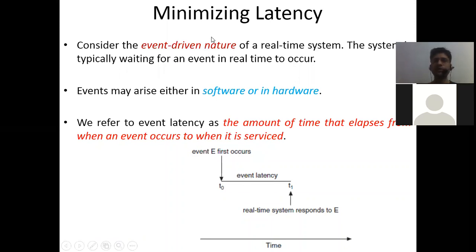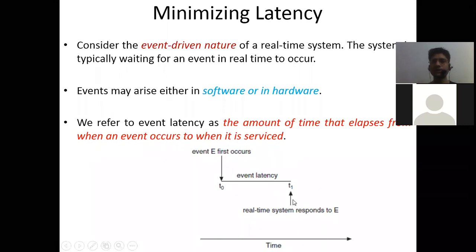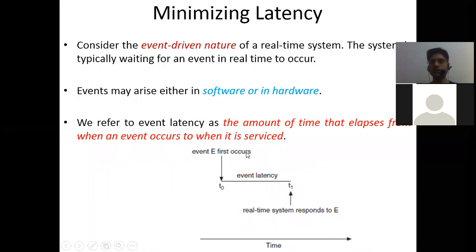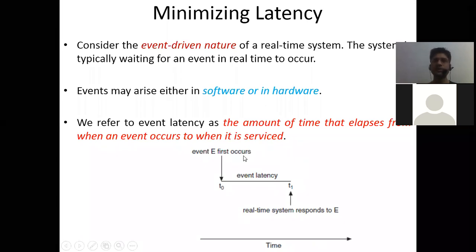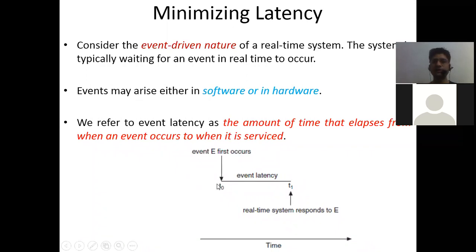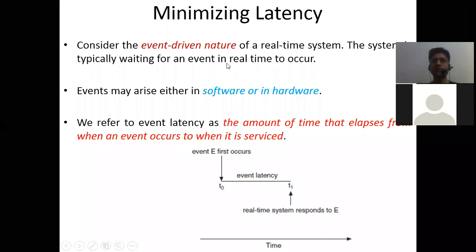Latency is the amount of time that elapses from when an event occurs to when it is serviced — that is t1 minus t0. This diagram is important for your examination: you should draw it and explain that at t0 the event E first occurs, and at t1 you get the first service. This is called event latency. The goal is to minimize this latency.